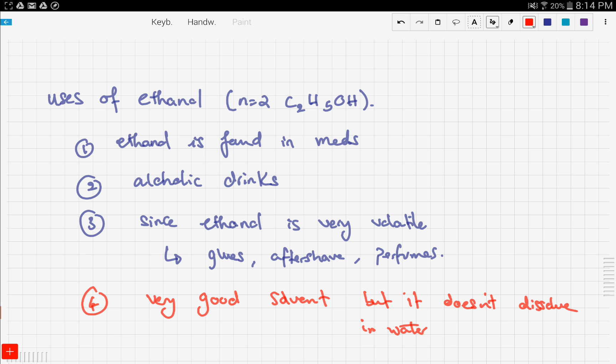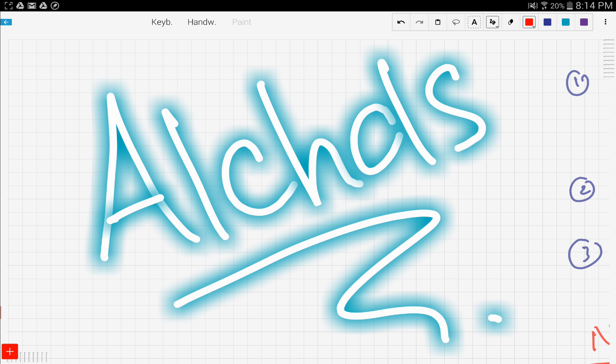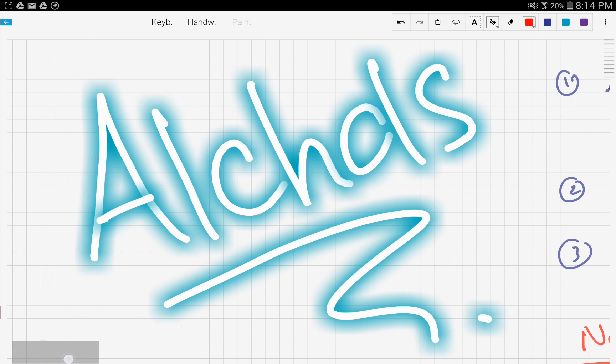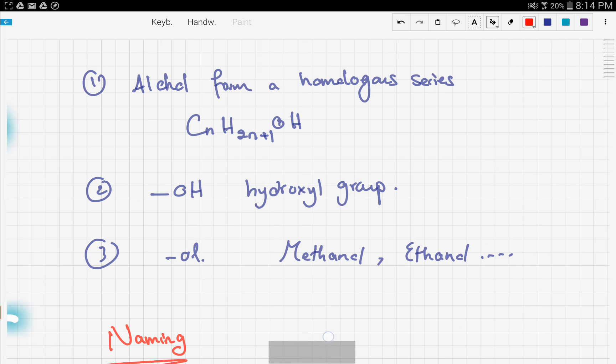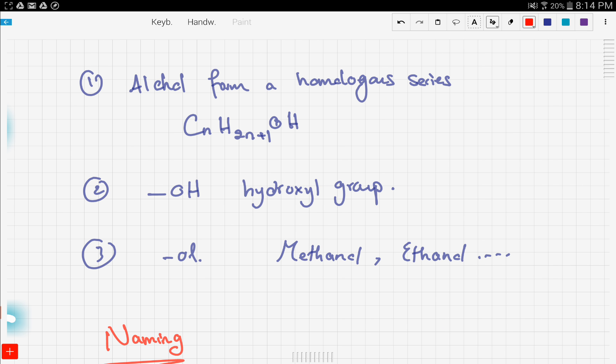So that's it for the uses of ethanol. Let's recap. In this video we talked about the family of alcohols and we said that the family of alcohols form a homologous series using this formula right there, CNH2N+1OH. They're famous for the hydroxyl group OH, and while naming alcohols we put the suffix -ol.